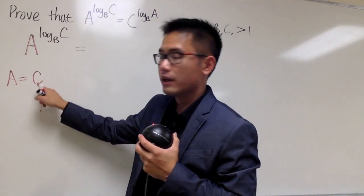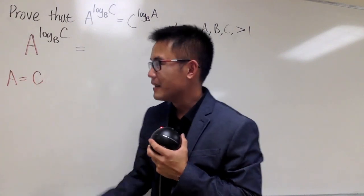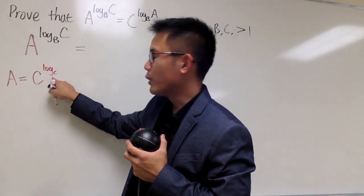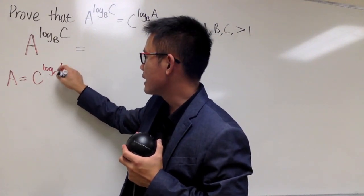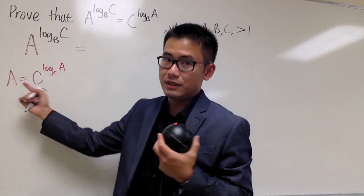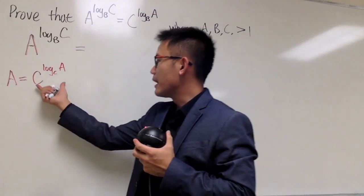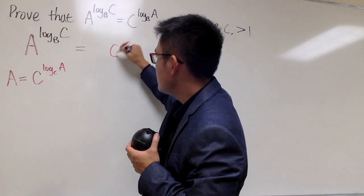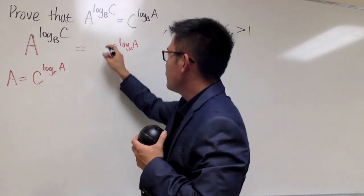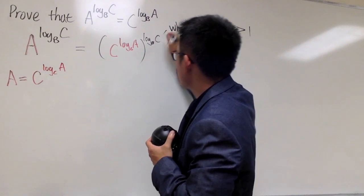How can A equal something with C as the base? Well, if C is the base, we're going to use a logarithm to help us out. If C is the base for the power, we use log base C so they cancel out, and put A as the input — so C to the log base C of A gives us back A. This is the key: I will plug in C to the log base C of A for that A, giving us [C to the log base C of A] raised to the log base B of C power.